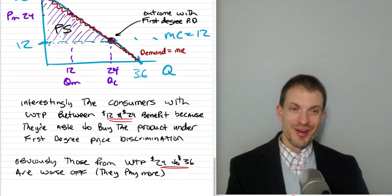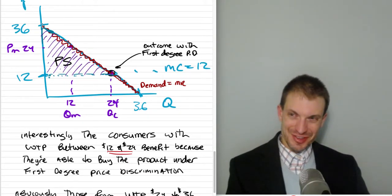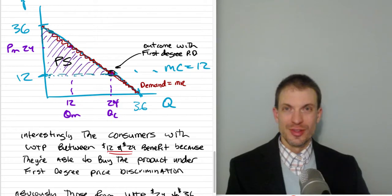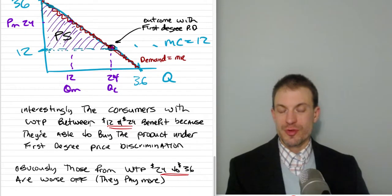Obviously however, the consumers with willingness to pay between 24 and up to 36 are doing worse with first-degree price discrimination. They were served either way. There's 12 units sold whether we have a single price monopolist or one practicing first-degree price discrimination.